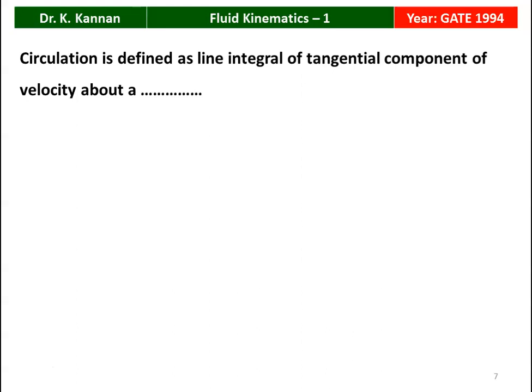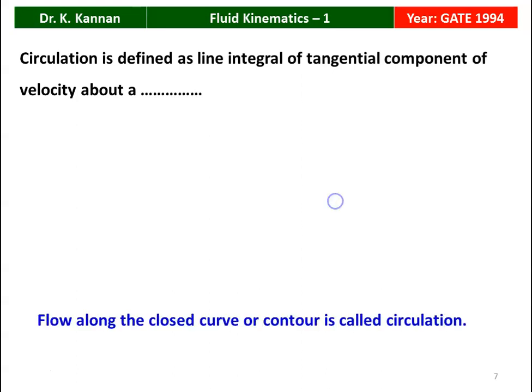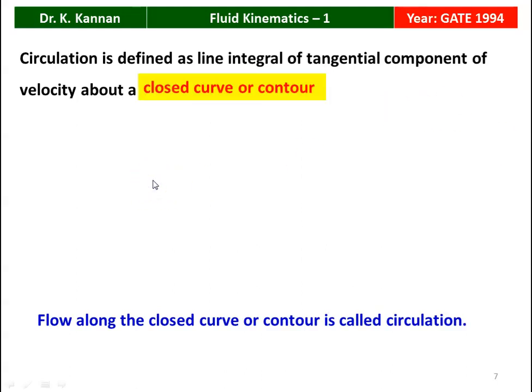Circulation is defined as the line integral of the tangential component of velocity about a closed curve or contour. The definition for circulation: flow along a closed curve or contour is called circulation. So the answer is closed curve or contour — circulation is defined as line integral of the tangential component of velocity about a closed curve or contour.